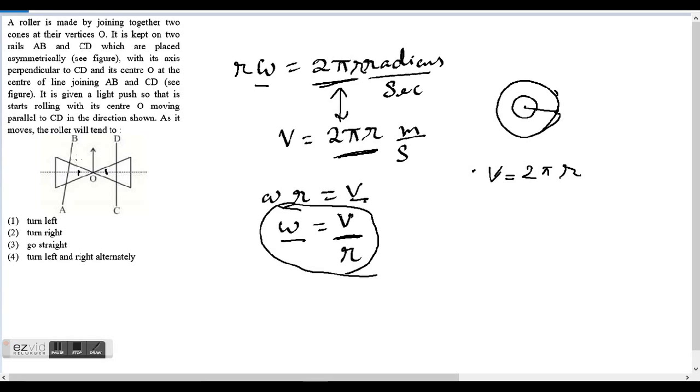When the roller will, let's say, reach this point, we can see that r, which is this r, the radius is getting smaller, and this r, let's say it's capital R, remains the same.